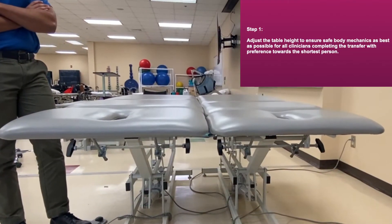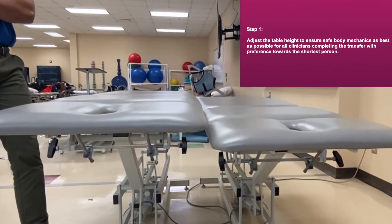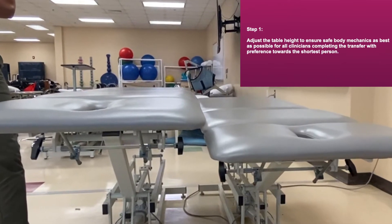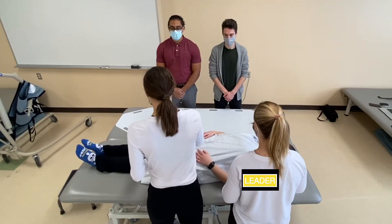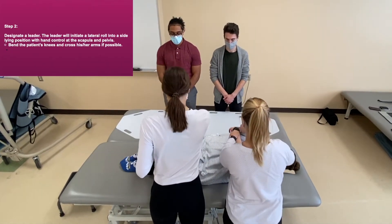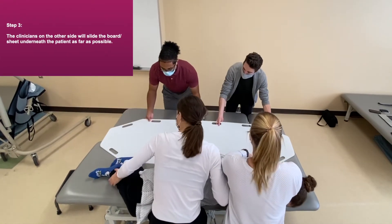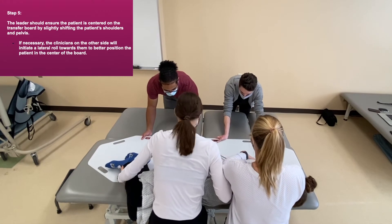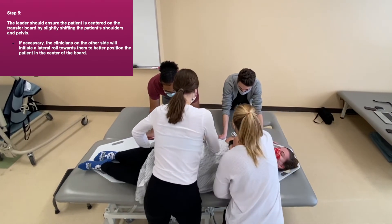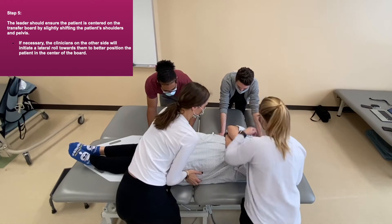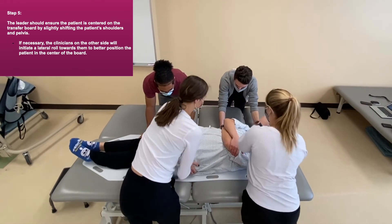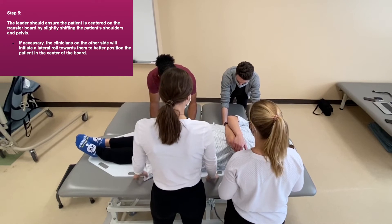Adjust the table height to ensure safe body mechanics as best as possible for all the clinicians completing the transfer, with preference towards the shortest person. Designate a leader. The leader will initiate a lateral roll into a sideline position with hand control at the scapula and pelvis. If possible, bend the patient's knees and cross his or her arms. The clinicians on the other side will slide the board underneath the patient as far as possible. The leader will carefully roll the patient back into a supine position on top of the transfer board, and should ensure the patient is centered on the transfer board by slightly shifting the patient's shoulder and pelvis.